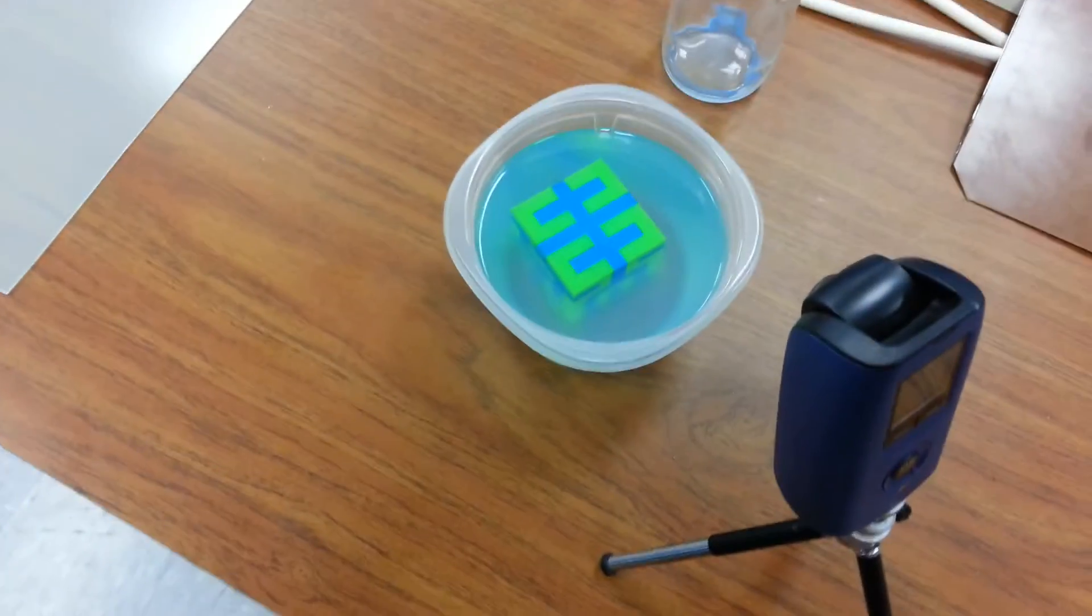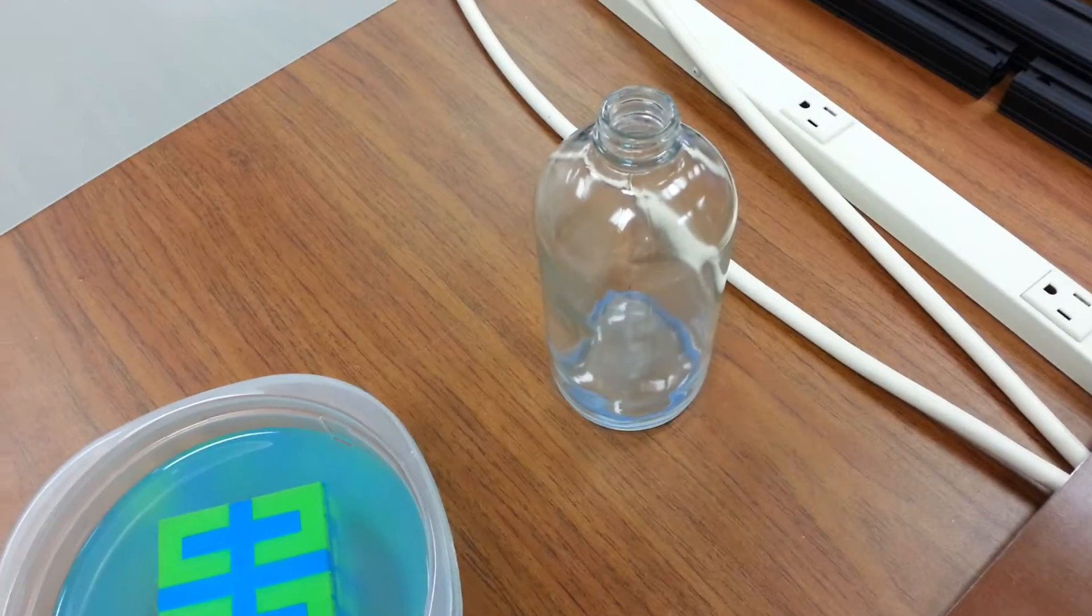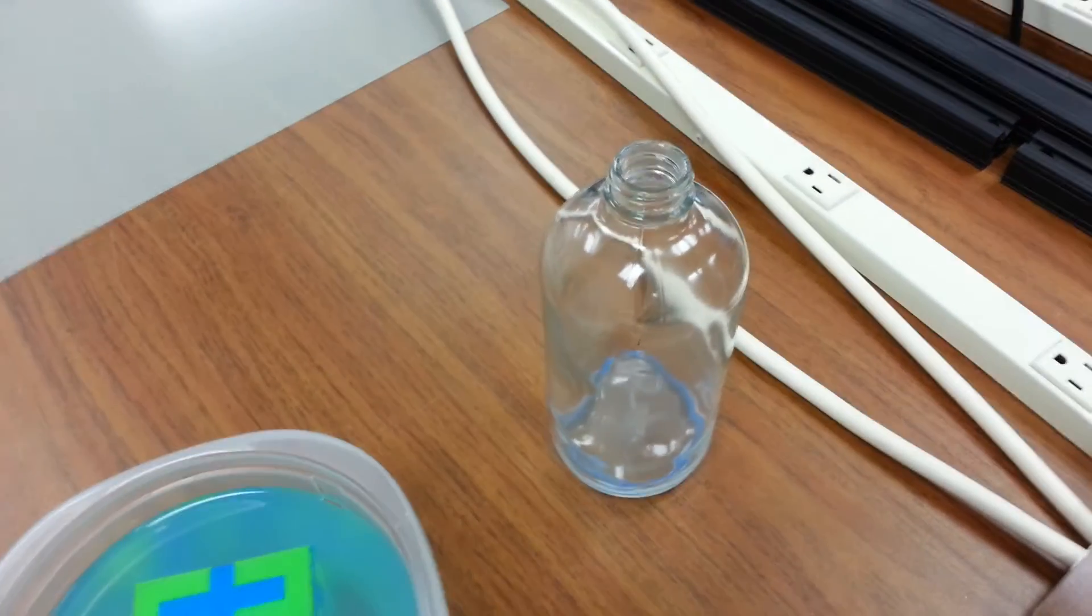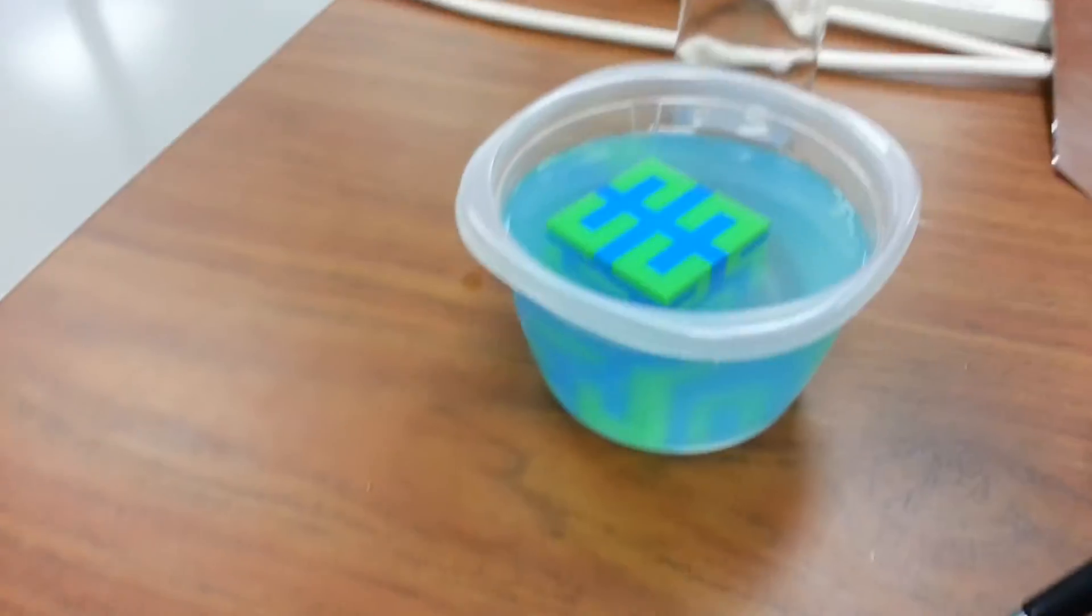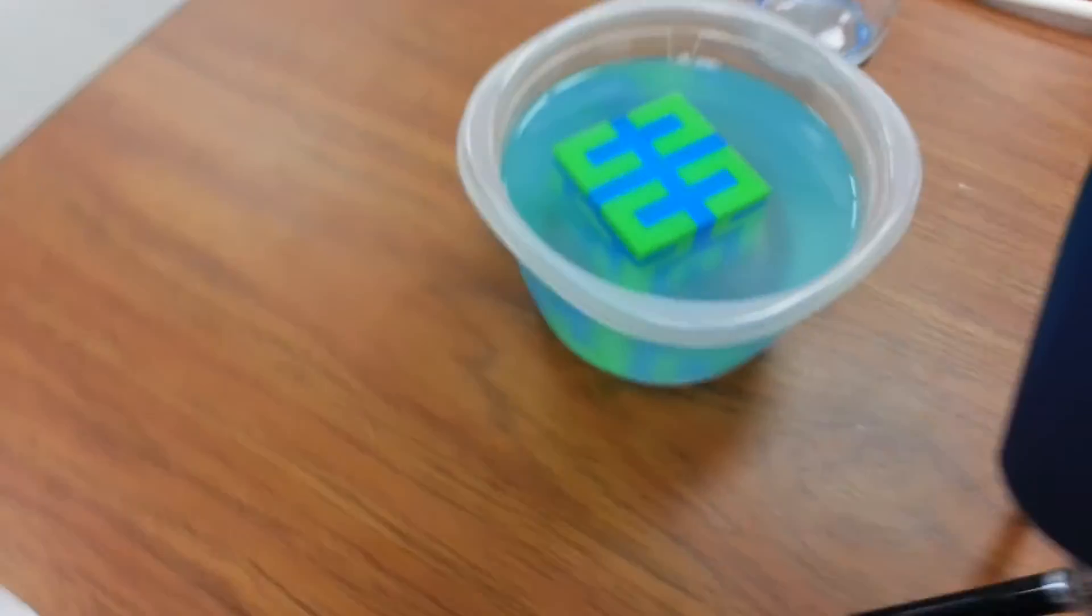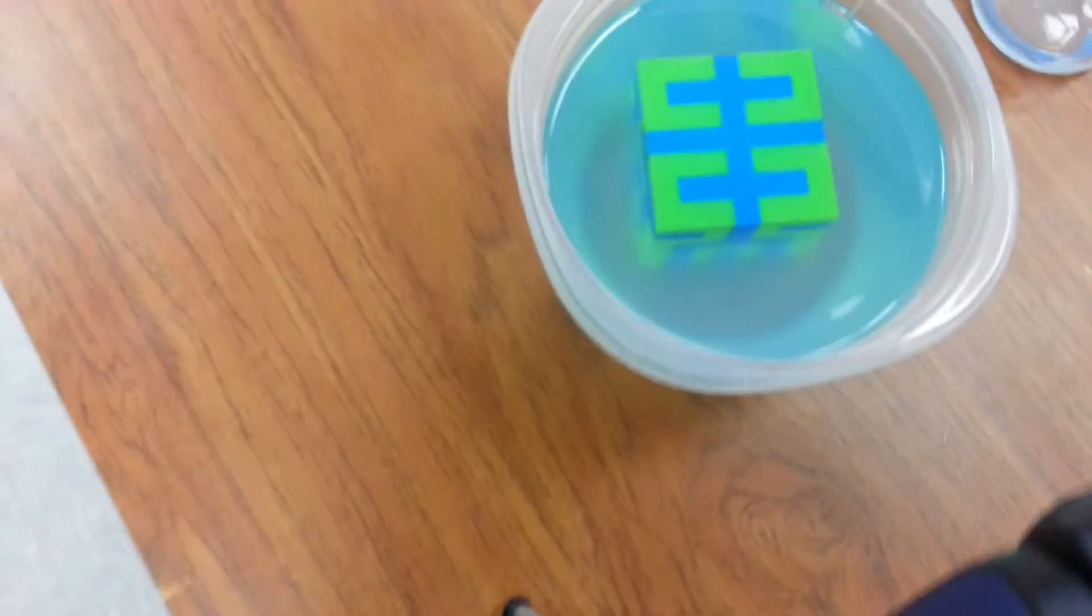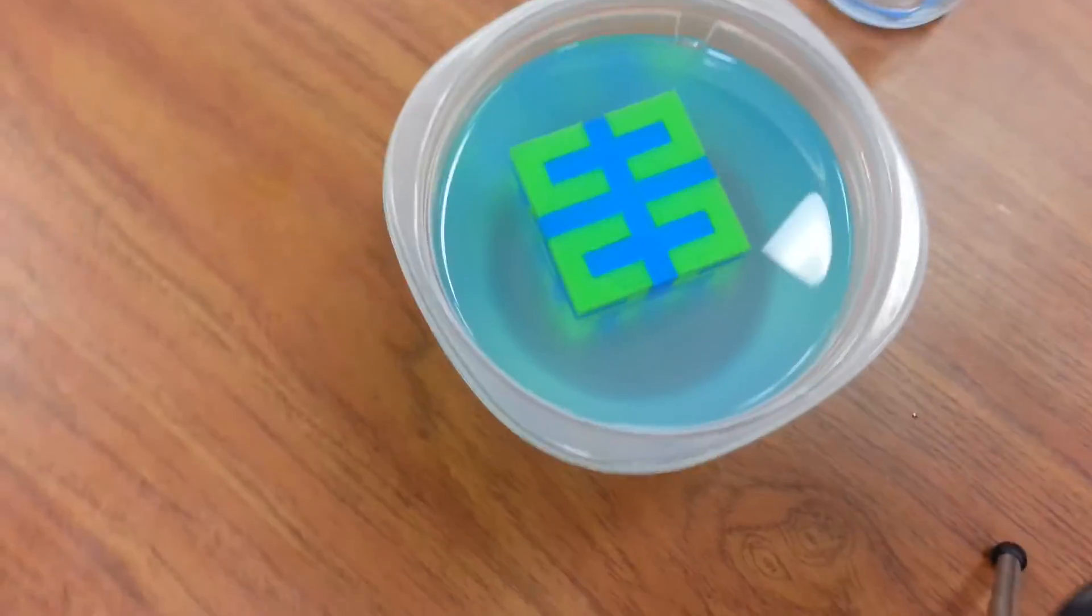Here we have poured the remnants of the last HIPS, the D-Limonene that dissolved the HIPS for another object, into this plastic bowl made out of PET. We have submerged the object that we printed in the last video in the D-Limonene.